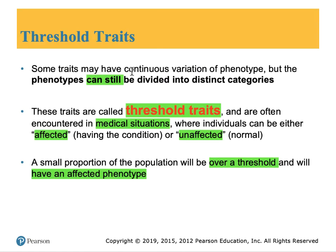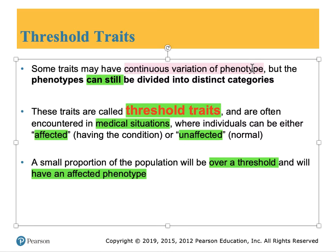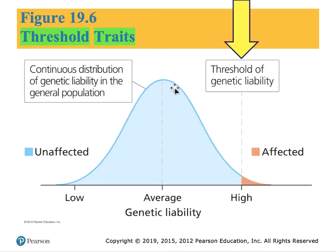In some situations there may be a huge continuous variation in phenotype caused by genes, but the phenotype can still be divided into two or three distinct categories. In those cases we use the term threshold traits. These normally have a medical correlation — people are either affected with the condition or unaffected. If you're below the threshold value you will not have the disease; if you're over the threshold value, you will have the disease.